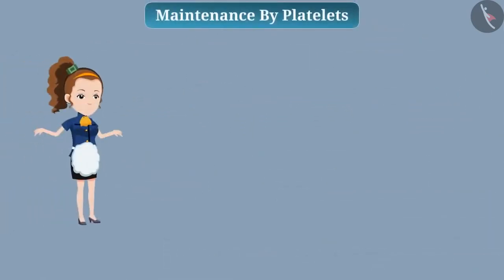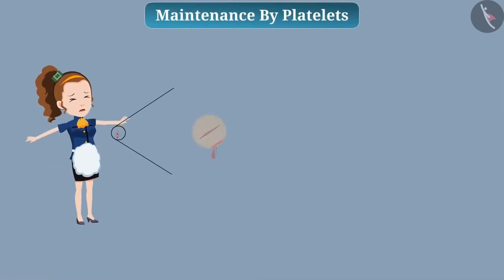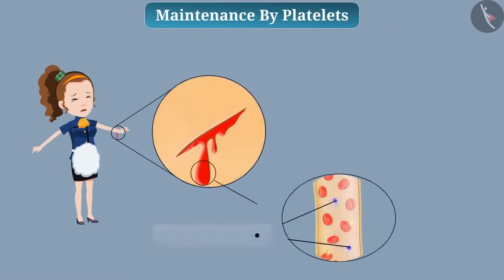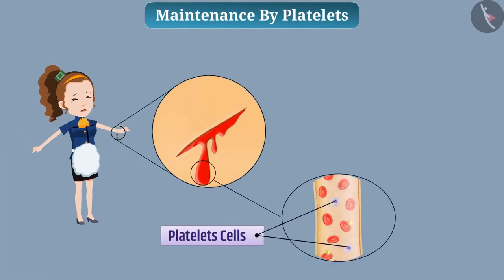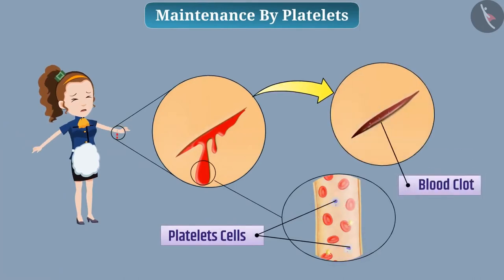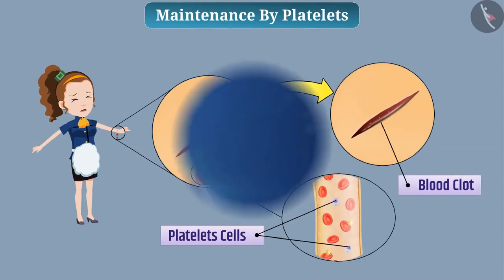Maintenance by platelets. When we get hurt, there are platelets in the blood to stop the bleeding from our body. These cells make a blood clot at the place of bleeding and stops the bleeding. So today, we learned about transportation.